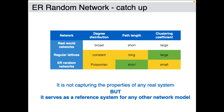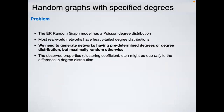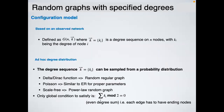We will now look at models proposed to make random networks more realistic. The first one is the configuration model, which solves the problem of the degree distribution. The idea is to generate networks having predetermined degrees or a predetermined degree distribution, but maximally random otherwise. We observe a real network, compute its properties, and want to know whether the same property holds in a randomized version of the network.